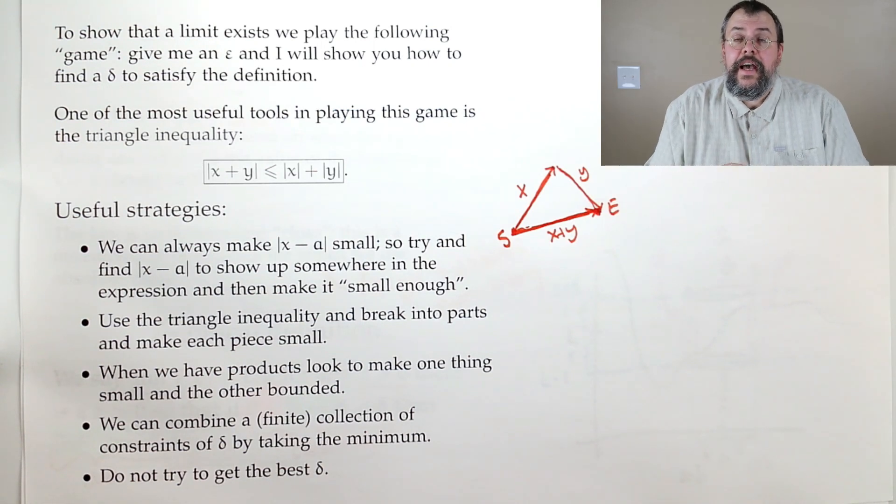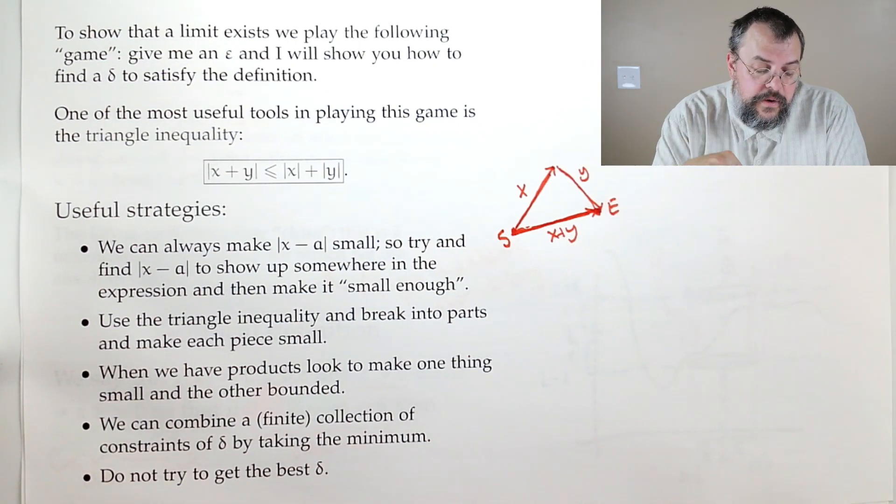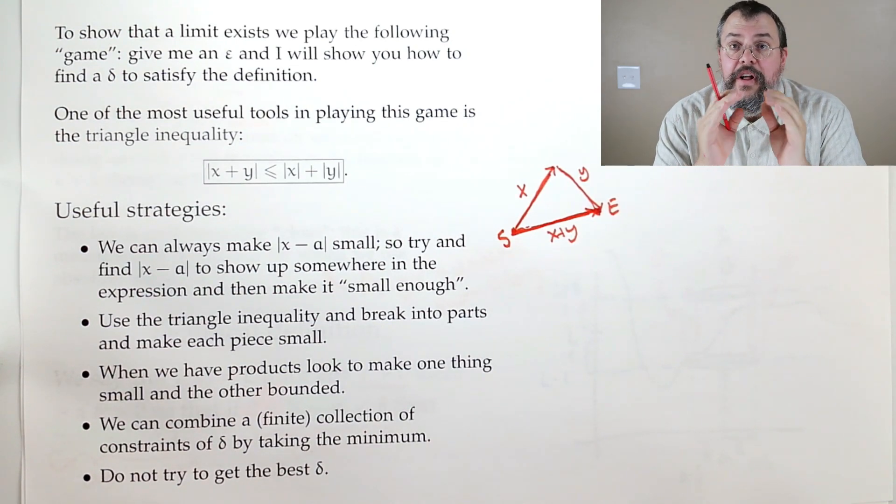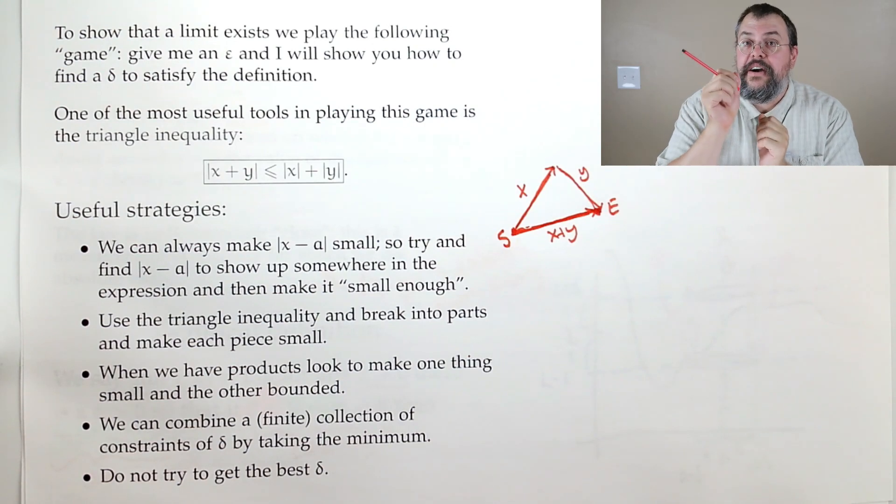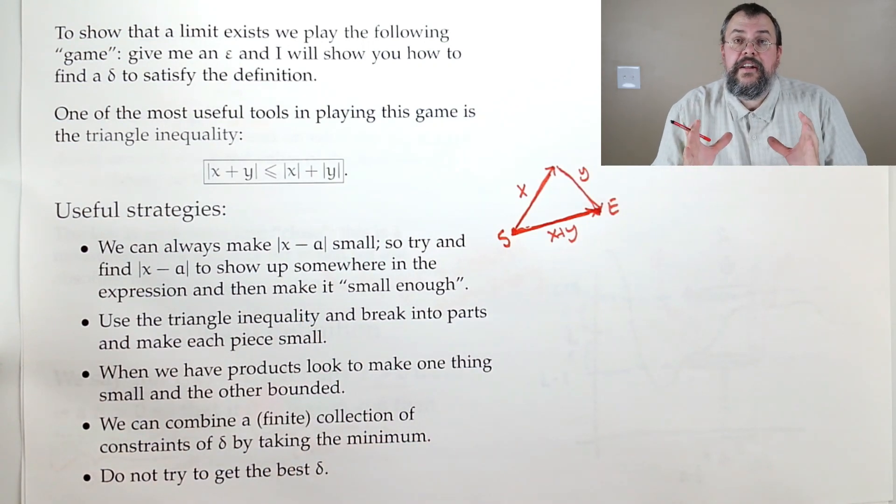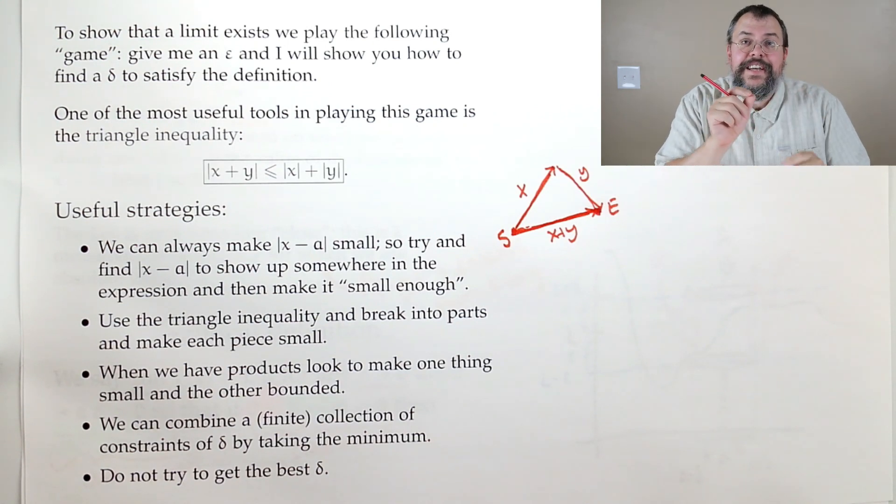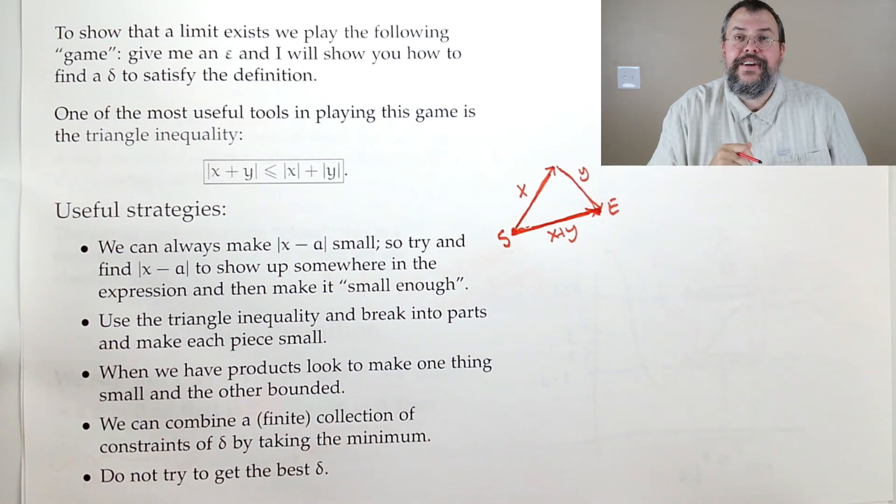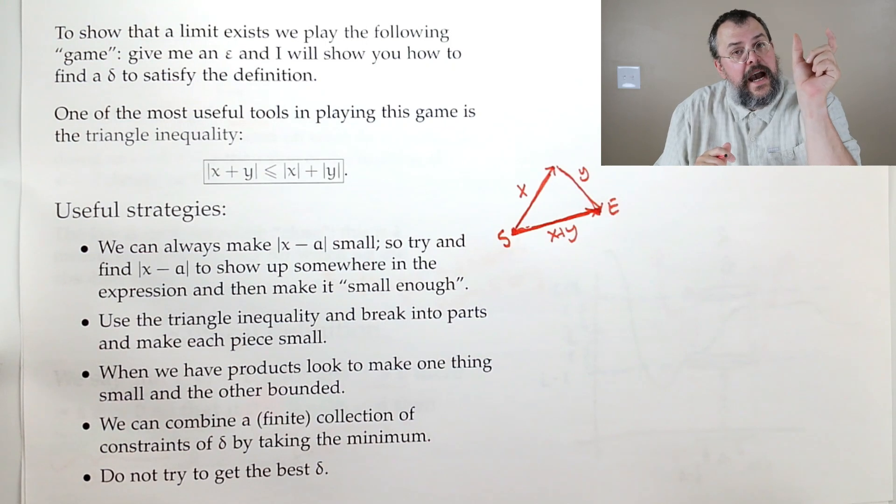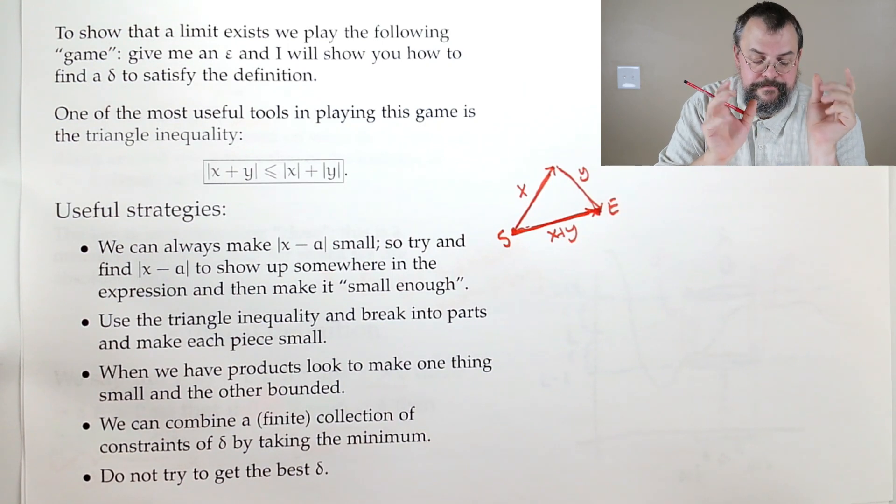Okay. So a couple of useful strategies. And really to see these strategies, you need to get your hands on some examples. We'll do that in the practice. So one thing to keep in mind is we get to make the absolute value of x minus a small. And we have control over that because remember, we get to pick our delta. So I can always make this piece small. So when I can, I try to say, okay, when I have that f(x) minus L, look inside of that expression. And can we find an x minus a in there? If we can, we are really in a good situation. Because what that allows us to do is we say, hey, I can make that part small. Now I just have to make sure it's small enough to compensate for whatever else there is. All right.